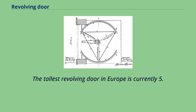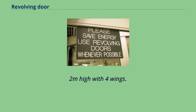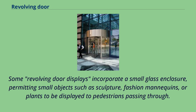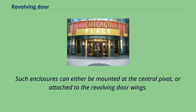The tallest revolving door in Europe is currently 5.2 meters high with four wings. Some revolving door designs incorporate a small glass enclosure, permitting small objects such as sculpture, fashion mannequins, or plants to be displayed to pedestrians passing through. Such enclosures can either be mounted at the central pivot or attached to the revolving door wings.